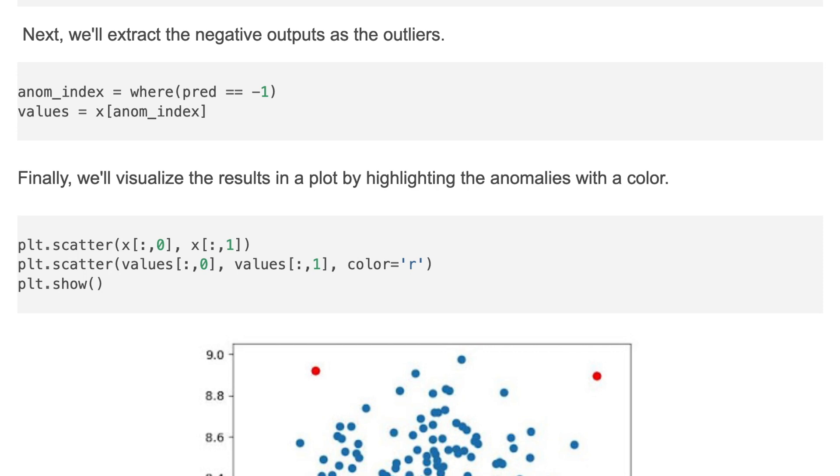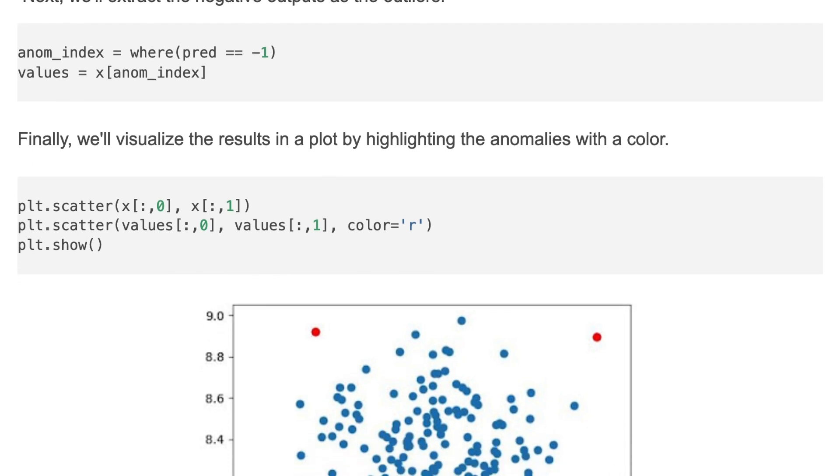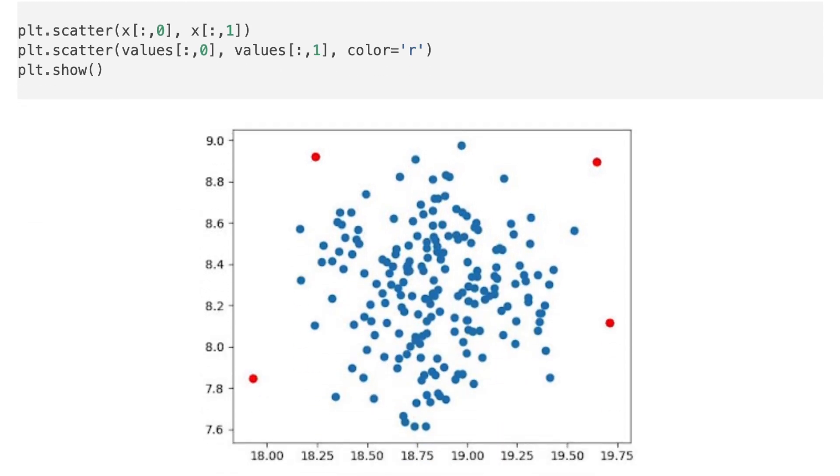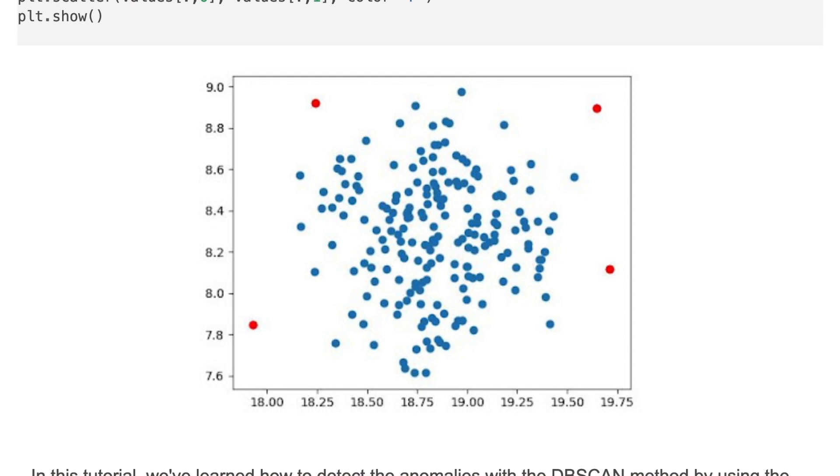Finally, we'll visualize the results in a plot by highlighting the anomalies with a color. Here is the output image. So here we detected four outliers and we highlighted them in a red color.